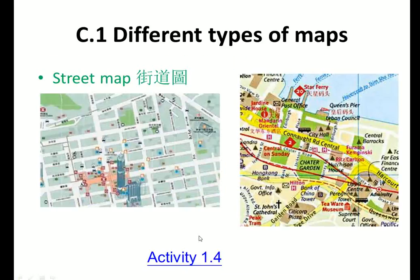The other common type is called street map. A street map is used to show the streets and is the most common map we use in our daily life. That's all for aerial photos and maps. Please go home and study your book pages 7 to 11 to see if you understand the concepts of aerial photos and maps.